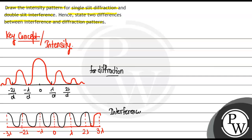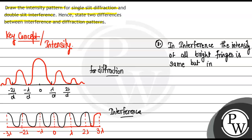Now we have to define the two differences. The first difference is that in interference, the intensity of all bright fringes is the same. But in diffraction, the intensity decreases.